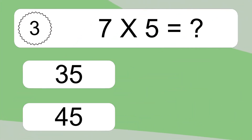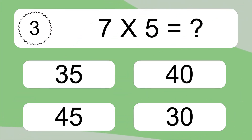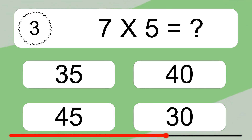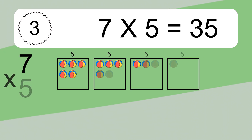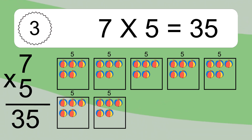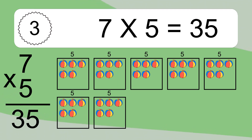7 times 5 equals what? 7 times 5 equals 35. We have 7 boxes, and each box has 5 colorful balls inside. If you count all the balls in all the boxes together, you will have 7 times 5 balls. This equals 35 balls.